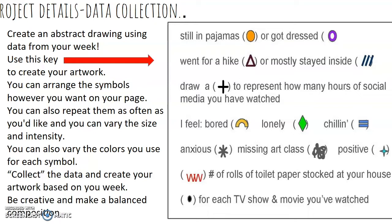You can arrange your symbols however you want on your page. You can also repeat them as often as you'd like, making sure that you're keeping in mind the data. You can vary the size and intensity. You can use whatever colors you want for your data — it doesn't have to be the ones necessarily on the key. You could change the diamond if you were feeling lonely to a different color depending on your mood. Collect the data and then create your artwork based on your week. Be creative and make your composition balanced.